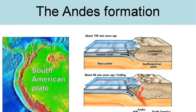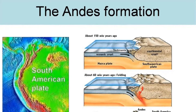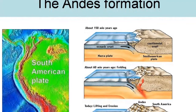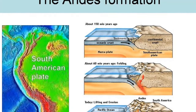In such settings, deposition of sediment on the continental shelf produces a thick platform of shallow water sandstones, limestones, and shales. Beyond the continental shelf, turbidity currents deposit sediments on the floor of the deep ocean basin.